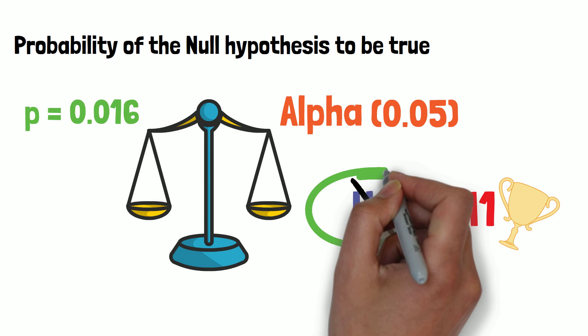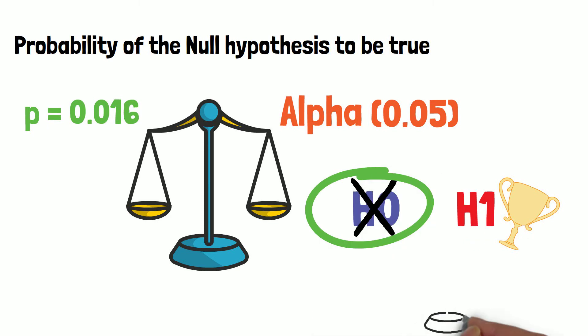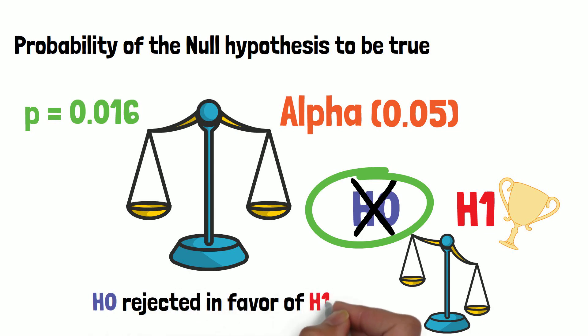Having rejected the null hypothesis based on our probability does not mean that the alternative hypothesis is true. It just means that it is more likely to be true than the null hypothesis you tested. We say that the null hypothesis can be rejected in favor of the alternative hypothesis.